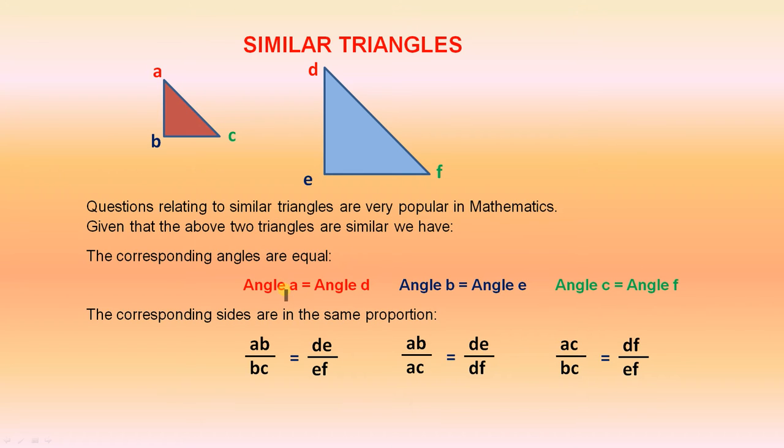That is angle A equals angle D. That is this angle here equals that angle there. Angle B equals angle E. So this angle here equals that angle there. Angle C equals angle F. That angle equals that angle. That's what we are given.